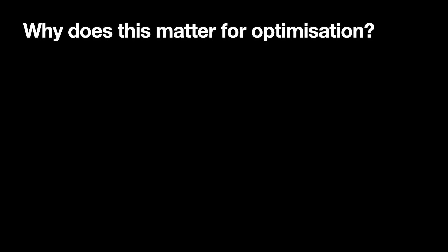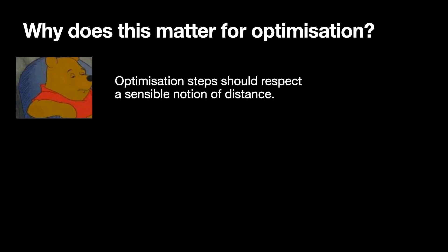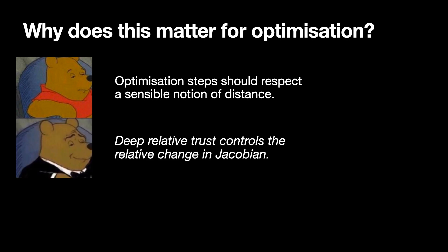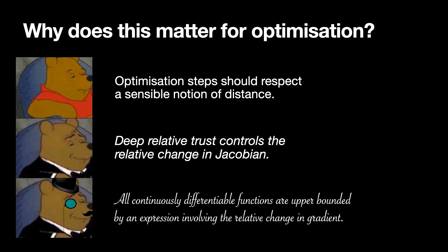What does any of this have to do with optimization? Most intuitively, an optimization step should respect a sensible notion of distance. One level up, deep relative trust controls the relative change in Jacobian. For the theorists, all continuously differentiable functions are upper bounded by an expression involving the relative change in gradient.